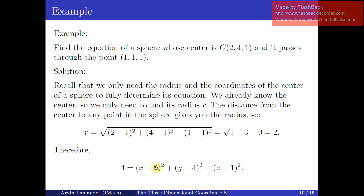Plugging the coordinates into the distance formula, we get r = 2. We now have both the center and the radius, so the equation of the sphere is (x-2)² + (y-4)² + (z-1)² = 4.